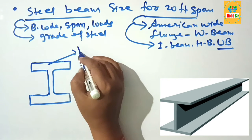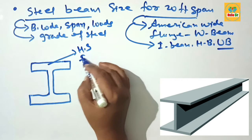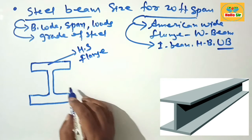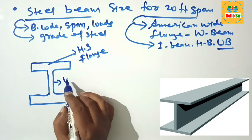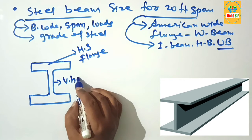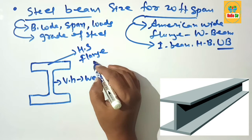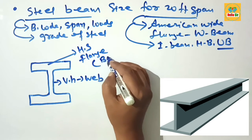This horizontal section is known as the flange of the W beam, and this vertical height is known as the web. The flange generally resists bending moment, and the web resists shear forces. This is the width of flange, and this is the thickness of flange.